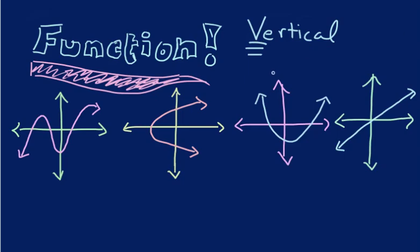The best way to find out if it's a function or not is just to do the vertical line test. So if you get graphs on a test or on homework and you're stuck, and you don't know how to determine if it's a function or not, just get a pencil, get a ruler, or get anything that's straight and go up and down. Because remember, vertical means up and down.